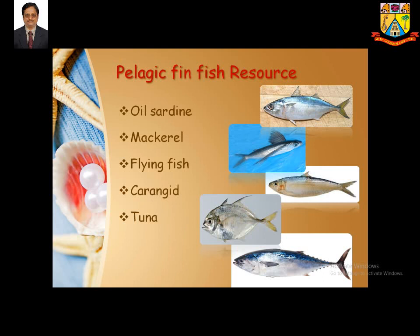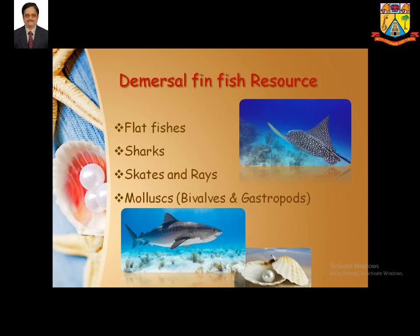Demersal fisheries include rays and skates, as seen on the Discovery Channel. They are exploited for shark liver oil and shark fins as byproducts. Molluscs — bivalves and gastropods — are also found in demersal fisheries. Pearls, one of the nine gems alongside diamonds and corals, are obtained from oysters such as Crassostrea madrasensis. This edible oyster yields pearls of great value.